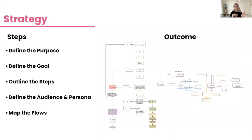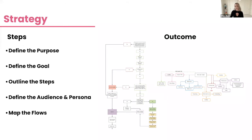Next, define your audience and persona. This informs how you write — who is this for, what do they know, what do they need help with? Do they need open-ended questions or just buttons? Do they need images? Then consider what the brand's personality already is and how it will adapt into an automated experience. With a bot, you can define this clearly and know it will be consistent every single time.